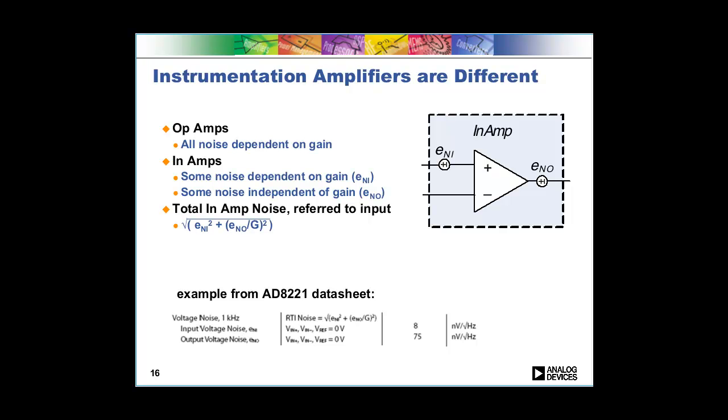So, there's one spec for an op amp. However, there's other components, for example, an instrumentation amplifier where some noise depends on gain and some noise does not. Some noise will get gained up. If you had a gain of a thousand, then the input referred noise would get gained up, but the output referred noise would not.